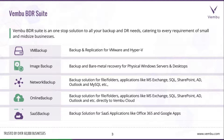Wambu BDR Speed is a one-stop solution for all your backup and disaster recovery needs, catering to every requirement of small and medium sized businesses. It has a group of products bundled together: Wambu VM Backup for backup and replication of VMware and Hyper-V; Wambu Image Backup for physical server image backups and bare-metal recovery; Wambu Network Backup for granular file and folder level backup and application level backups like Exchange, SQL, SharePoint, Active Directory, Outlook, MySQL, etc. Wambu Online Backup is a purely cloud-based solution for file, folder, and application level backup to Wambu Cloud. Wambu SaaS Backup is a backup solution for SaaS applications like Office 365 and Google Apps.